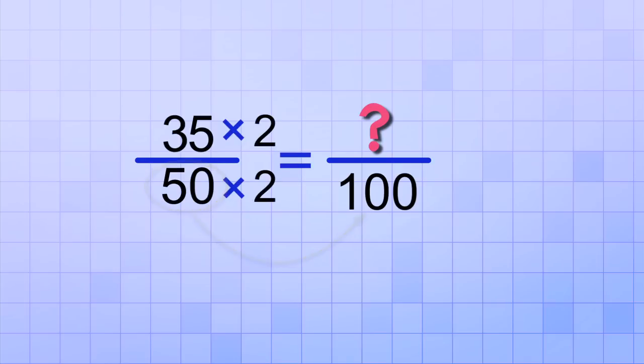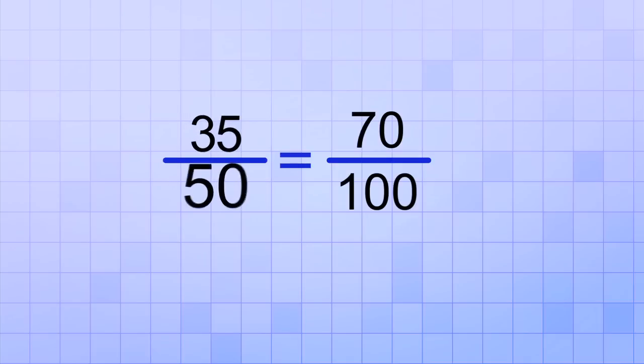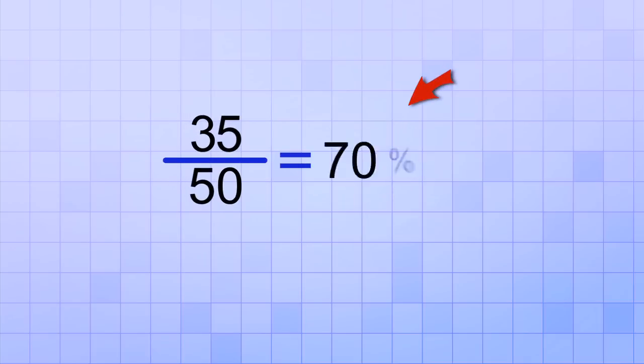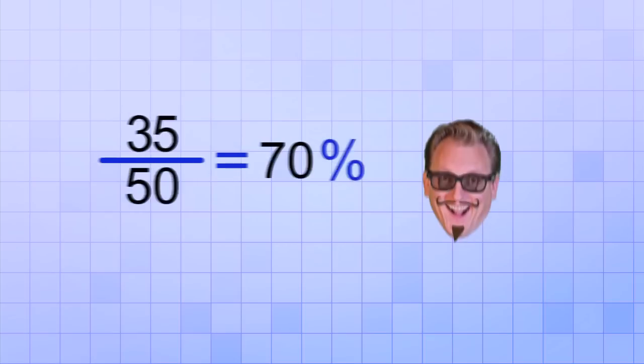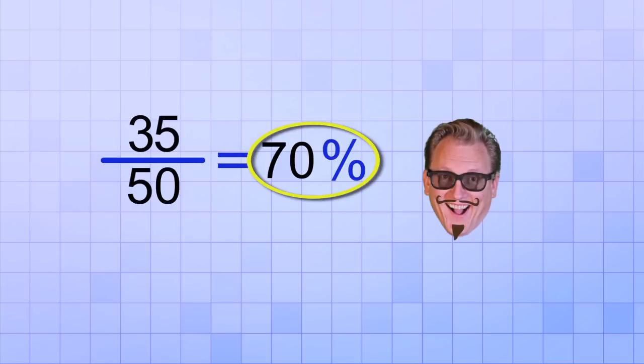Well, the number 2 looks like it would work. If we multiply the bottom by 2, 2 times 50 gives us 100, and then we also need to multiply the top by 2, and 2 times 35 equals 70. So now we can see that 70 over 100 is equivalent to 35 over 50. And since 70 over 100 is just 70%, it means that our uncle has visited 70% of the states.